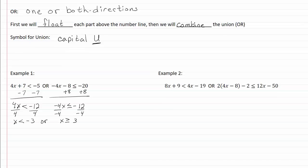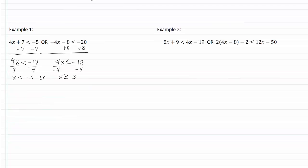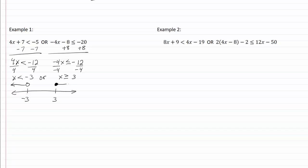Now we're going to graph these. Here's my number line — here's negative three and here's three. We have x is less than negative three, so that's going to be an open dot going to negative infinity. And then we have x is greater than or equal to three — that will be a closed dot going to positive infinity.